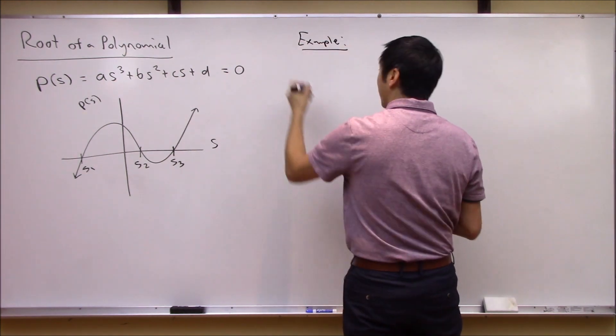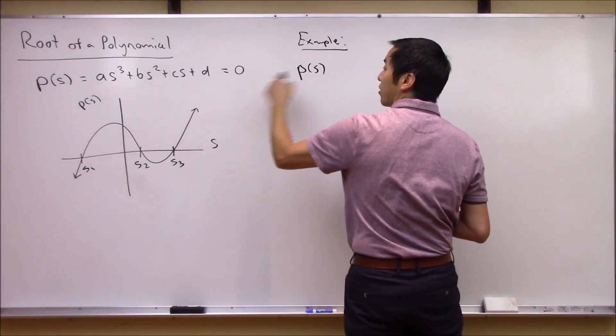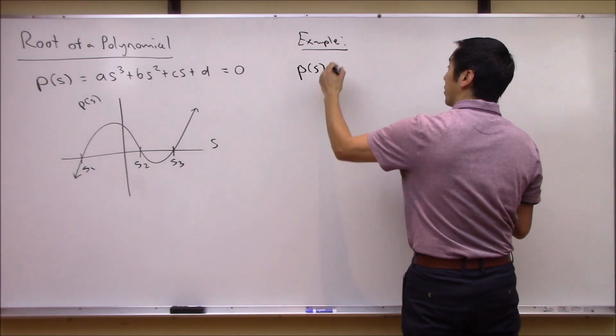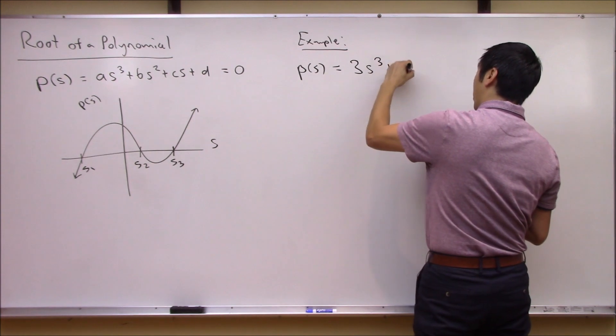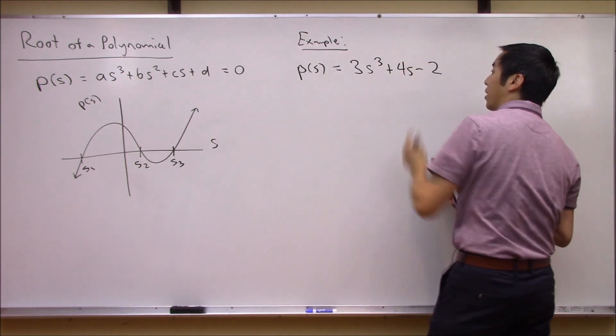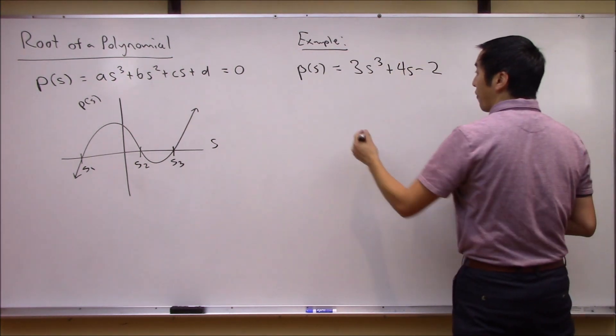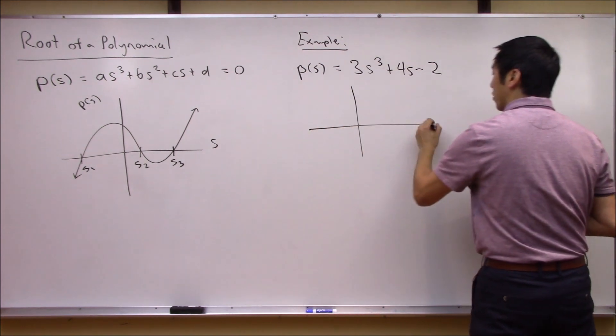But in many cases we might need more sophisticated tools. So for example, let's look at a specific polynomial. Let's consider this third-order polynomial: 3s^3 + 4s - 2.